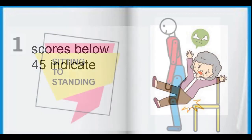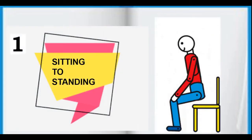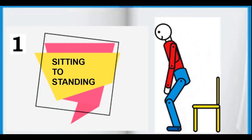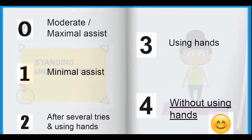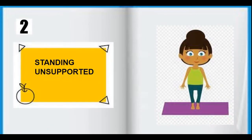The first task is sitting to standing. The patient needs to go from the sitting position to the standing position. If maximal or moderate assistance is required, we give a score of 0. If the patient can go from sitting to standing even without using the hands independently, we give them the maximum score of 4.